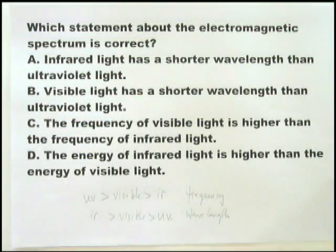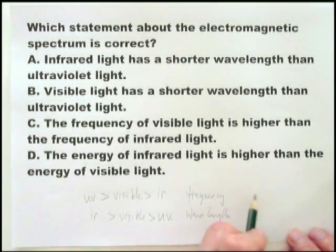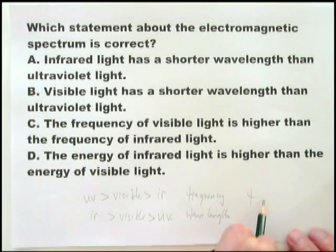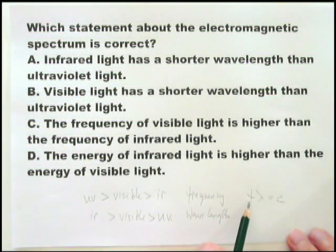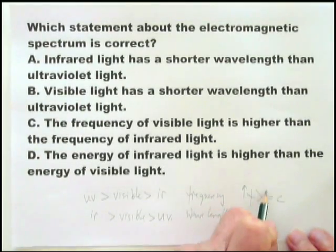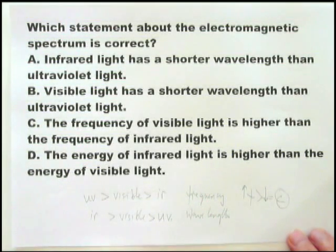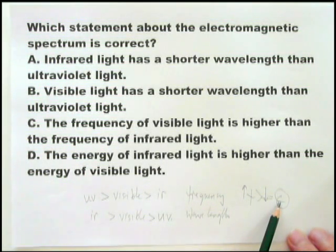That you have to remember. You also have to remember that the relationship between frequency and wavelength is that you multiply them together: F times lambda equals C. These are in the data booklet, so for Paper 2 you don't really have to remember them. For Paper 1, you have to remember that if frequency goes up, wavelength must go down. C is the velocity of light, and that's the constant.